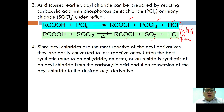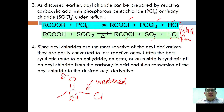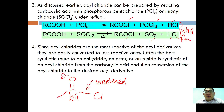Acyl chloride is the most reactive acyl derivative because of the highly electronegative oxygen, which causes the C=O bond to be polarized. This inductive effect weakens the C-Cl bond, so the chlorine is always ready to leave as a leaving group. It is often the best synthesis route to convert a carboxylic acid to acyl chloride first, then convert to the desired acyl derivative such as an anhydride, ester, or amide.